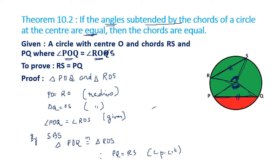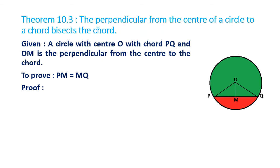So what you have learned: when the chords of a circle are equal, they make equal angles at the center. Conversely, if the angles made at the center are equal, then the chords are equal. In both theorems, we used the angles made at the center.